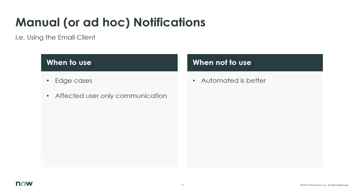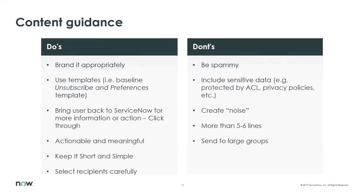You can also set up the email client for notifications — there's a white paper available on the community on how to get that stood up. You want to use those for the ad hoc, the edge cases, the stuff where manual intervention is helpful. You don't want to use them where automation is better. 95% of the time a notification should go out, just use the automated notifications for that.